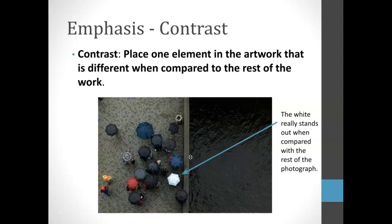Contrast is making something different than others within an image. It could be by having a different color, value, or a different size within the image, but you're trying to make it so that one thing is just really different. And because it's different, it will be noticed first. In this image, the white umbrella is something noticed first because of how bright it is compared to the rest of the image.